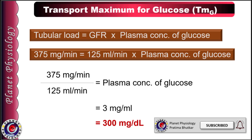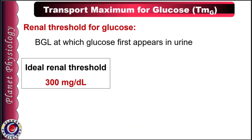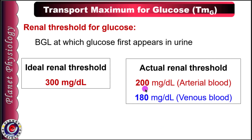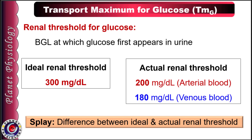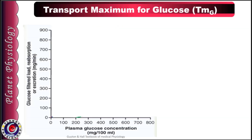When blood glucose level becomes 300 mg per deciliter, the tubules reach their maximum limit for reabsorption, and this value is termed the renal threshold. Renal threshold for glucose is defined as the blood glucose level at which glucose first appears in the urine. Ideally the renal threshold should be 300 mg per deciliter, but actually it is much lower — 200 mg per deciliter of arterial blood, or 180 mg per deciliter in venous blood. The difference between the ideal and actual renal threshold is called splay. The relationship between blood glucose, filtered load of glucose, its reabsorption, and excretion is shown in this graph.